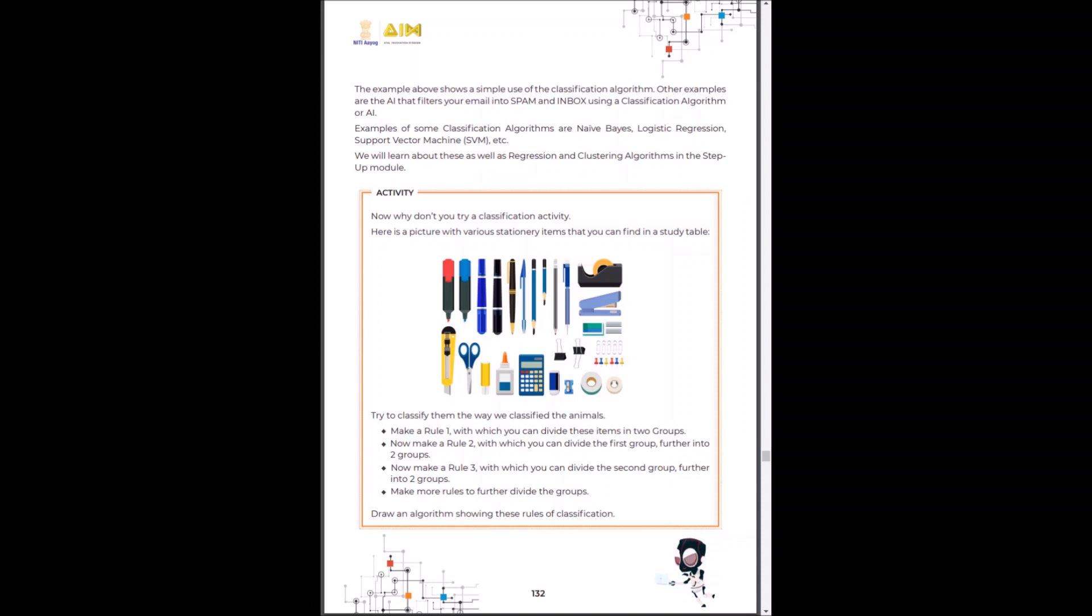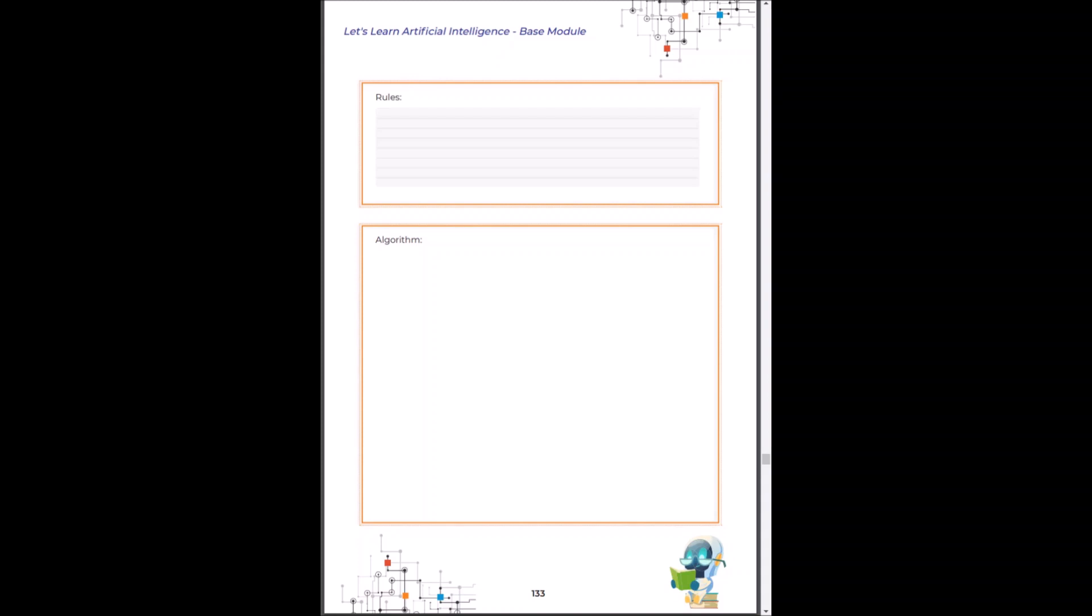Now, why don't you try a classification activity? Here is a picture with various stationary items that you can find on your study table right now. Make three to four rules to classify your stationary items. Pause this video and identify the rules and create your own algorithm.